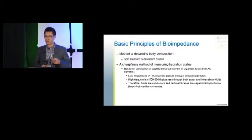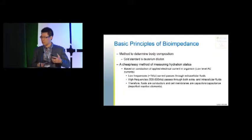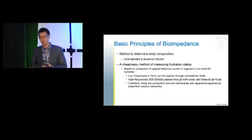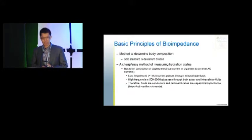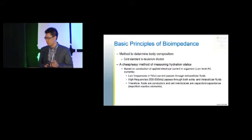Bioimpedance is a simple way for us to determine body composition. The gold standard is deuterium dilution — heavy water — but as you can imagine, it's quite complicated to actually do. You have to inject something, take something out of the body, do some calculations, and then calculate body composition. One easy method to measure hydration status is bioimpedance, which is based on conductivity of an alternating current at the cellular level. Low frequencies around one kilohertz pass through extracellular fluids only, while higher frequencies between 500 to 800 kilohertz pass through both extracellular and intracellular fluids. As the body is an imperfect conductor, we're able to calculate the resistance as well as the reactance.